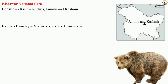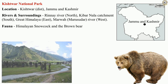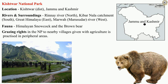The Kishtwar National Park is located in Kishtwar district of Jammu and Kashmir. It is surrounded by the Rennai River in the north, the Kibar Nala catchment in the south, the Great Himalayas in the east, and the Maru Sudar River in the west. Grazing rights in the northern part have been given to nearby villagers for practicing agriculture.